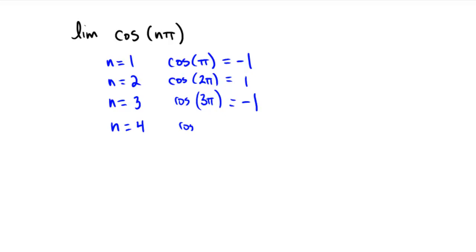n equals 4 would be the cosine of 4 pi, and this would be, again, 1.